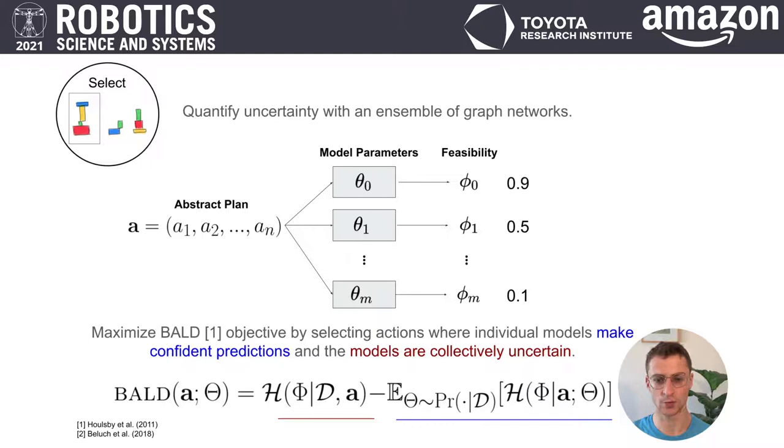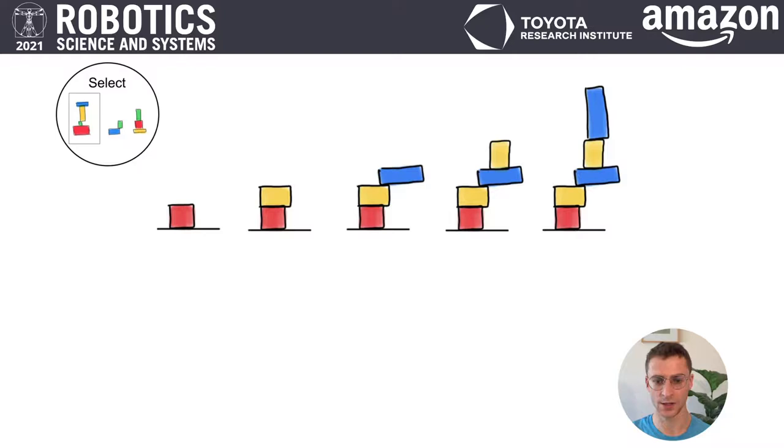The maximally informative experiment is one where each individual model in the ensemble makes a confident prediction, but the models collectively disagree. This is known as the BALD acquisition function, introduced by Houlsby et al., which allows information gain to be calculated in the label space instead of in the high-dimensional parameter space.